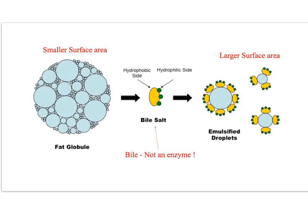We need to increase the surface area, and that's done by bile or bile salts. It breaks up and emulsifies the large fat globule into much smaller droplets, increasing the surface area so that a faster rate of enzyme action can occur. Just remember: bile is not an enzyme — it's not breaking any bonds, it's just increasing the surface area.